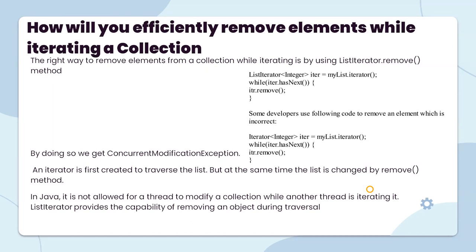By doing so, we get a ConcurrentModificationException. An iterator is first created to iterate the list, but at the same time the list is changed by the remove method. In Java, it is not allowed for a thread to modify a collection while another thread is iterating it. The iterator provides the capability of removing an object safely during the iteration process.